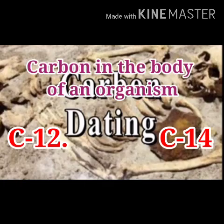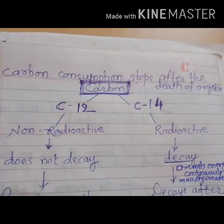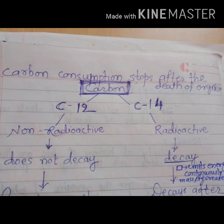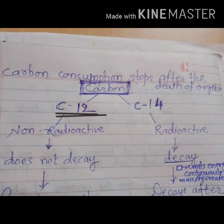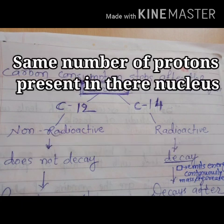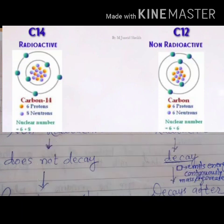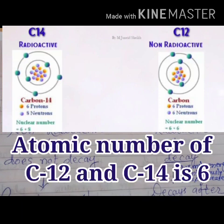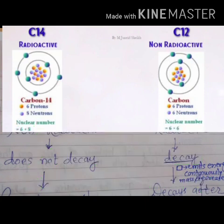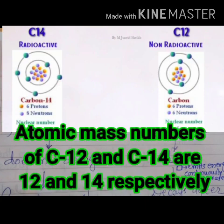What is carbon dating method? Carbon consumption stops after the death of an organism. Carbon inside the body of an organism exists in two different forms: C12 and C14. C14 is an isotope of carbon-12 — both have the same number of protons in their nucleus, meaning six protons. The atomic number of C12 is six and of C14 is also six, but atomic mass numbers are different: atomic mass number of C12 is 12 and of C14 is 14.